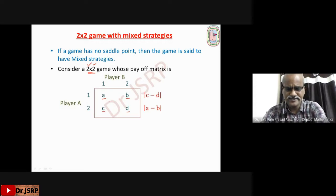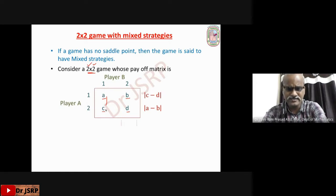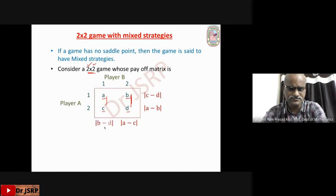Similarly, take the difference of the first column: A minus C. Take its absolute value, |A − C|. Write it opposite to the second column. Similarly, take the second column difference: B minus D. Take its absolute value, |B − D|. Write it opposite to the first column.